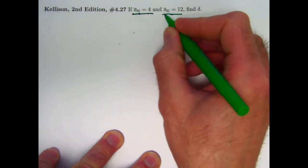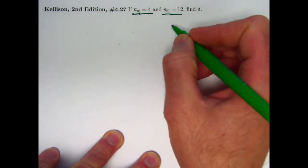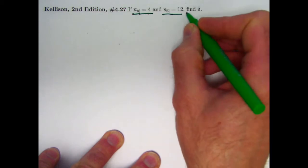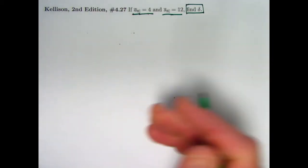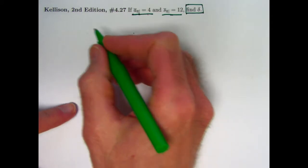and the future value of such an annuity evaluated at time n is 12, find delta, find the force of interest. And again, to keep things simple, I'll think about time as being in years.